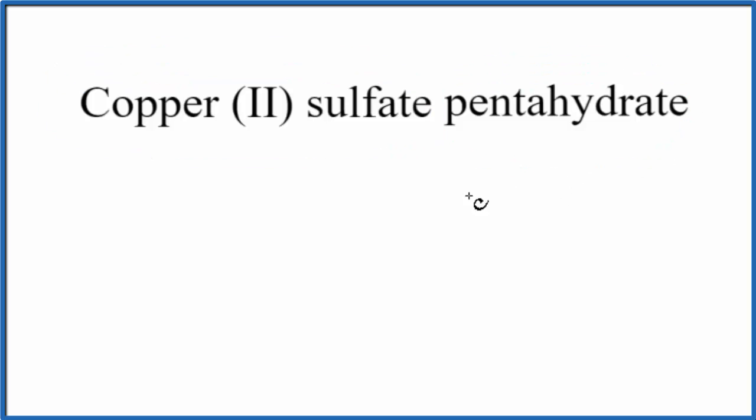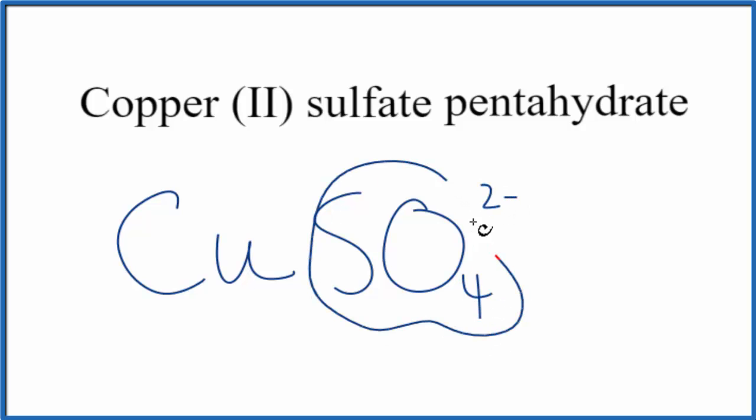For copper, if we look on the periodic table, we have an element symbol of Cu. The sulfate - this 'ate' ending - we won't find that on the periodic table. You either memorize that it's SO4²⁻, or you look it up on a table if you're allowed. So the sulfate ion is SO4²⁻, and that 2- applies to the whole thing.